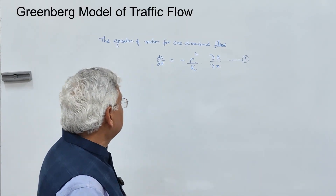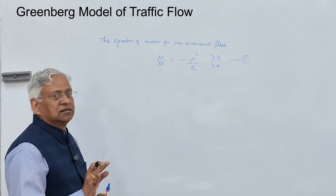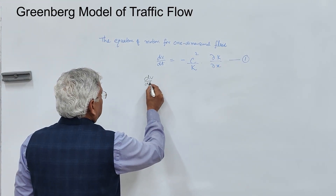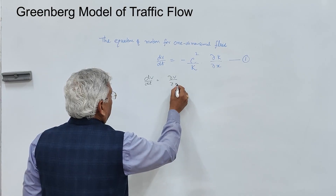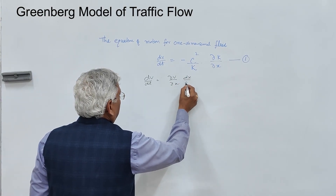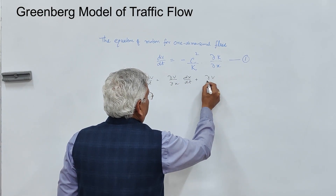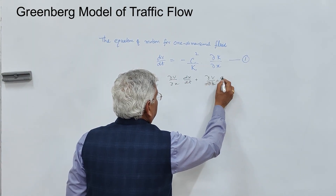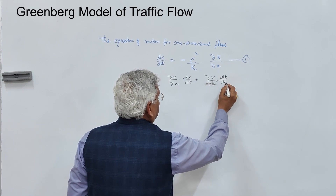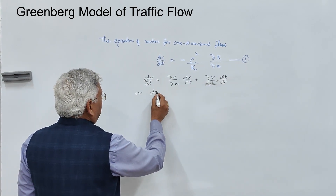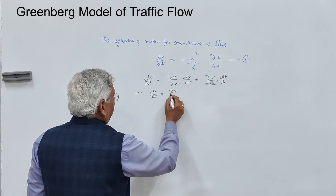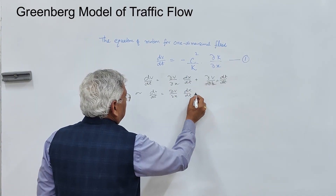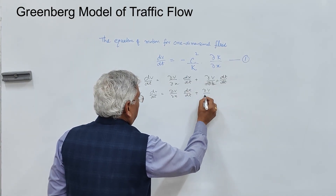Because speed is a function of both time and space, dV/dt should be del-v upon del-x into dx/dt plus del-v upon del-t into dt/dt. Or simply, dV/dt equals del-v upon del-x into dx/dt plus del-v upon del-t.